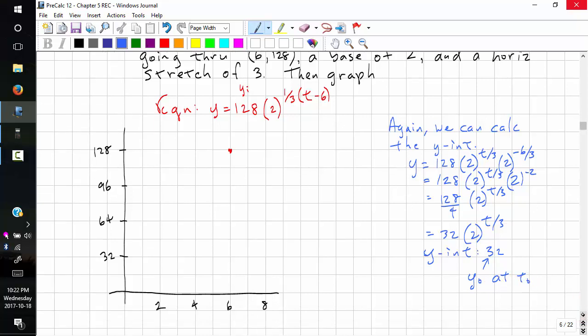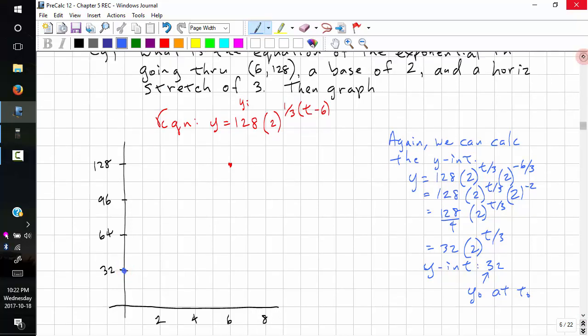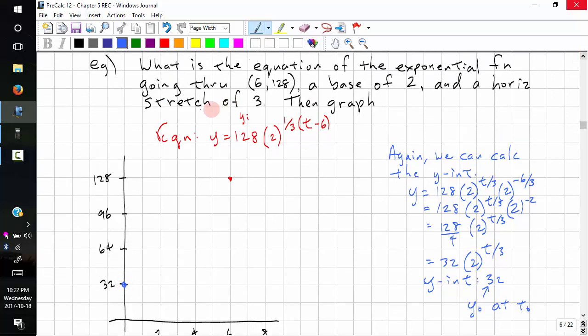So now we know that. We can graph this. But, we also know that it has a base of 2. So it doubles every 3 hours. So at 3, this should be half. So it's at 64.